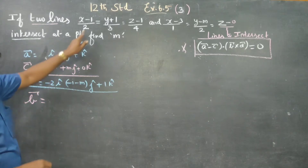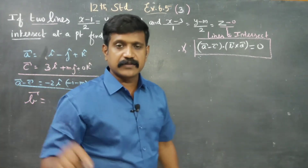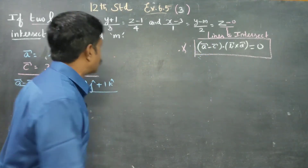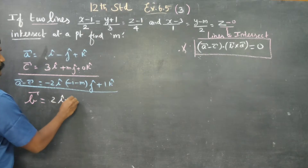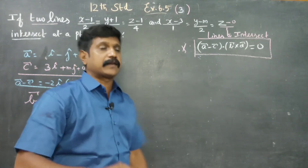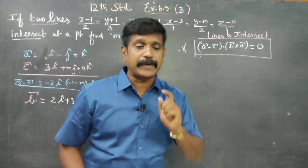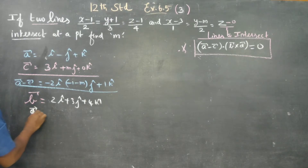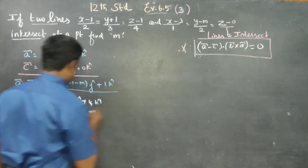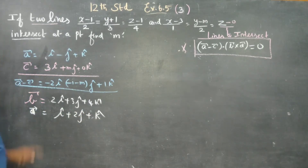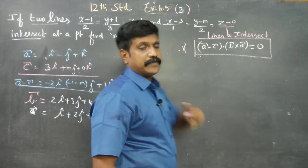Now coming to the b vector and d vector — these are the parallel vectors from the denominator of the Cartesian form. B vector equals 2i plus 3j plus 4k. And d vector equals i plus 2j plus k.